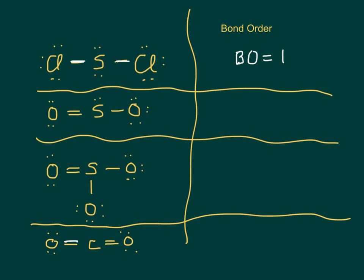If you look at CO2 here at the bottom, it's all double bonds. Another way of saying it's all double bonds is to say the bond order is two.